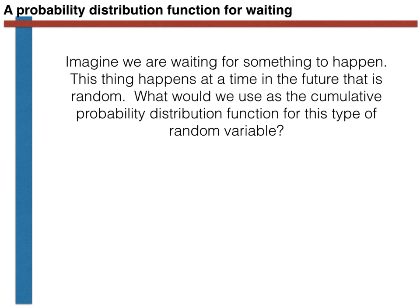We want to ask the following question: imagine we are waiting for something to happen, and this thing happens at a time in the future that is random. What would we use as the cumulative probability distribution function for this type of random variable? There are a few things we can note immediately. First, the random variable must be continuous, as time is expressed using a real number — in other words, time is infinitely divisible.